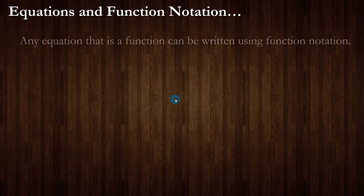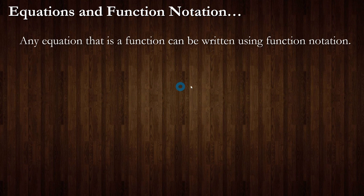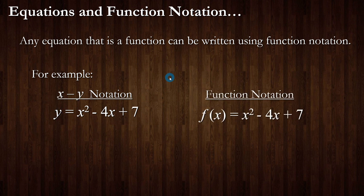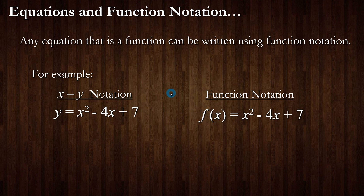Any equation that is a function can be written using function notation. For example, y equals x squared minus 4x plus 7 can also be written as f(x) equals x squared minus 4x plus 7. The only difference is that instead of writing y we write f(x), giving our function a name — f — and being explicit that x is the input. These two notations mean the same thing. And that is what functions and function notation are all about.